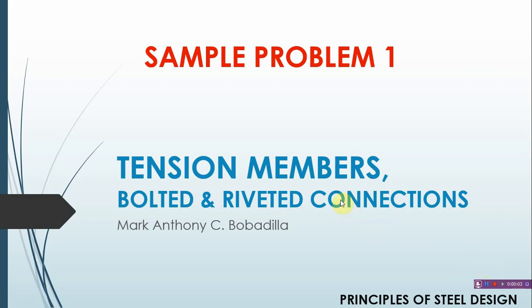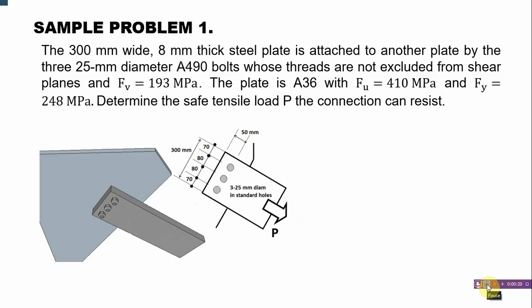Hello everyone. So for this video, we'll be solving a sample problem related to tension members, bolted and riveted connections on principles of steel design. This will be our first problem. Here's the problem: The 300 mm wide, 8 mm thick steel plate is attached to another plate by three 25 mm diameter A490 bolts whose threads are not excluded from shear planes, and F_v = 193 MPa. The plate is A36 with F_u = 410 MPa and F_y = 248 MPa. Determine the safe tensile load P the connection can resist.